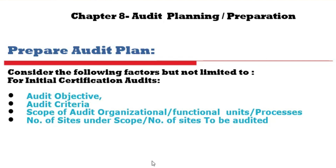This is how scopes and sites are to be decided. If two sites are doing identical jobs under the same management, with similar structure and similar controls, you can take one of them. Or if there are three or four sites, maybe two of them — there are certain guidelines based on which we choose the sites, based on the scope of activity at each site.